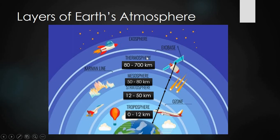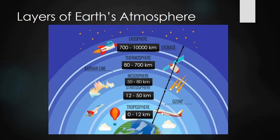After the thermosphere, the last layer is the exosphere. Its range is from 700 km to 10,000 km. This range is so large because the exosphere is the outermost layer of our atmosphere and it merges with outer space — so there is no fixed limit to how far it extends. Rockets going to space and to the moon pass through the exosphere. These are the 5 layers of Earth's atmosphere.